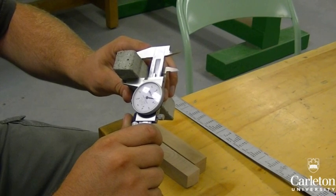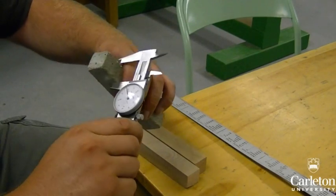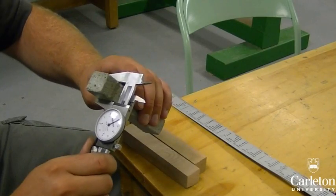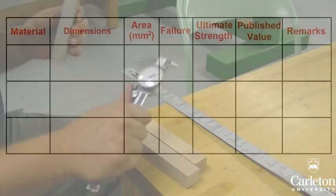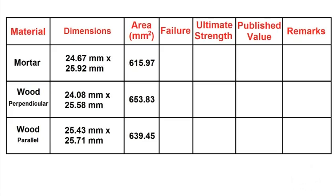These blocks are the compression specimens. Just as with the tension specimens, record the dimensions of these blocks. Use the calipers to record the length and width of each block. Measuring each dimension once will do. Calculate the cross-sectional area of each block.